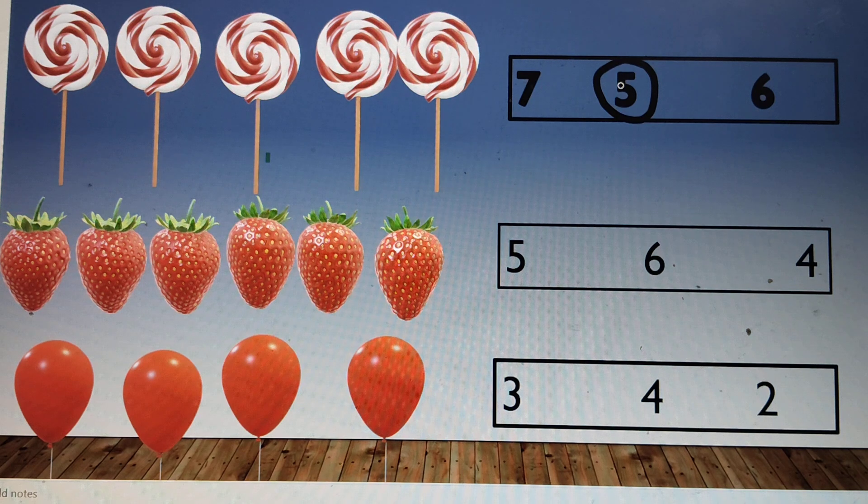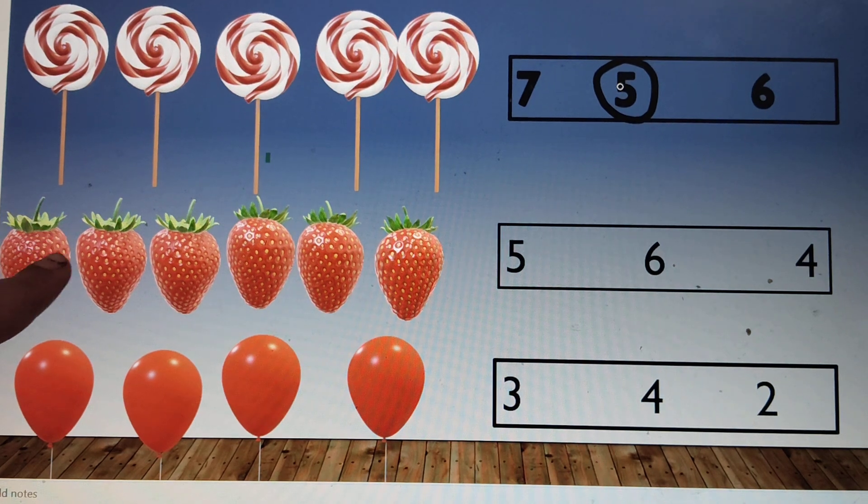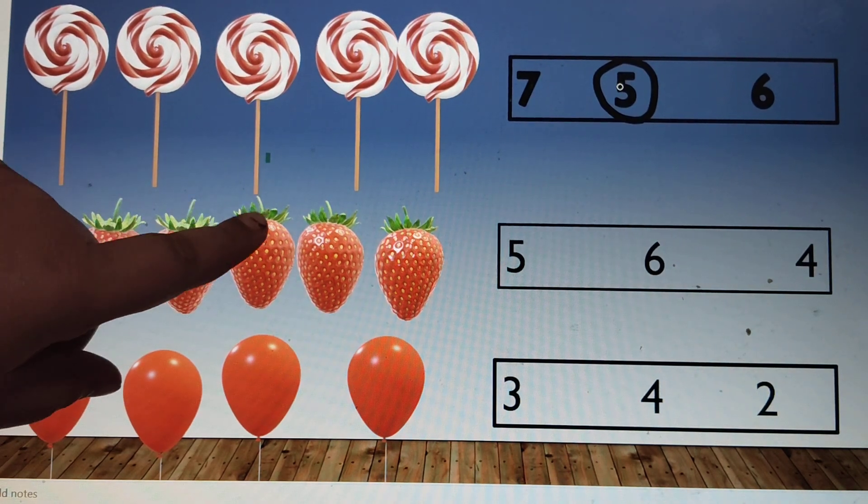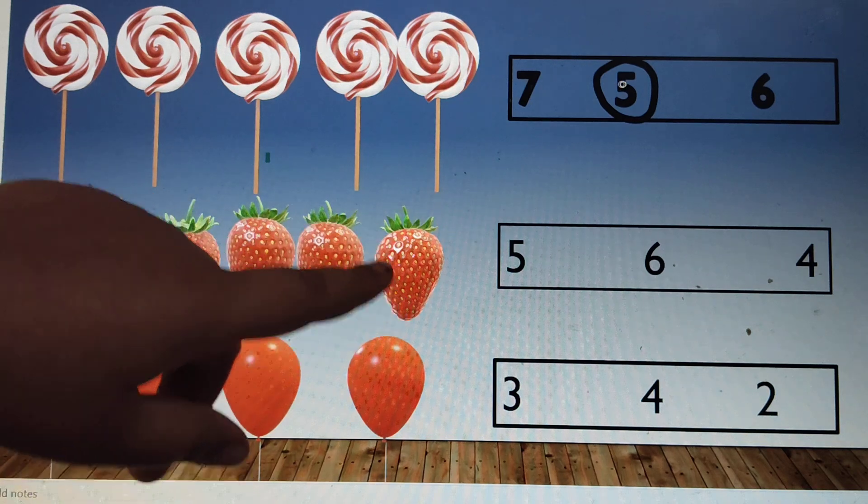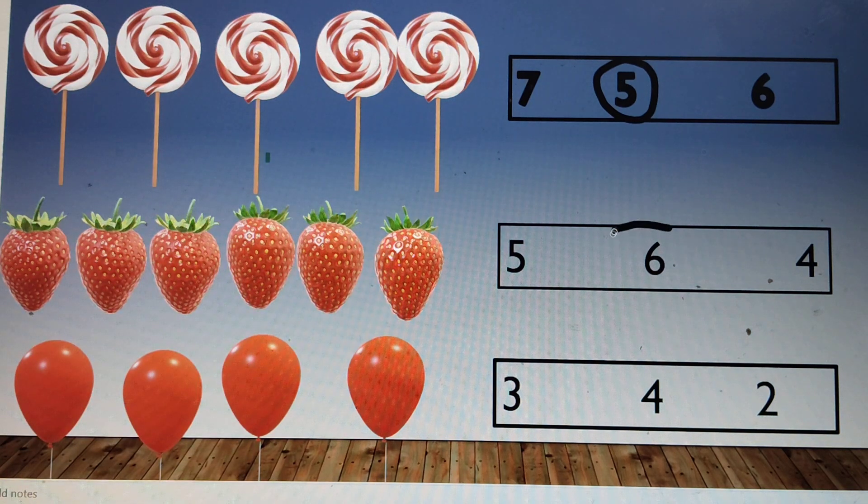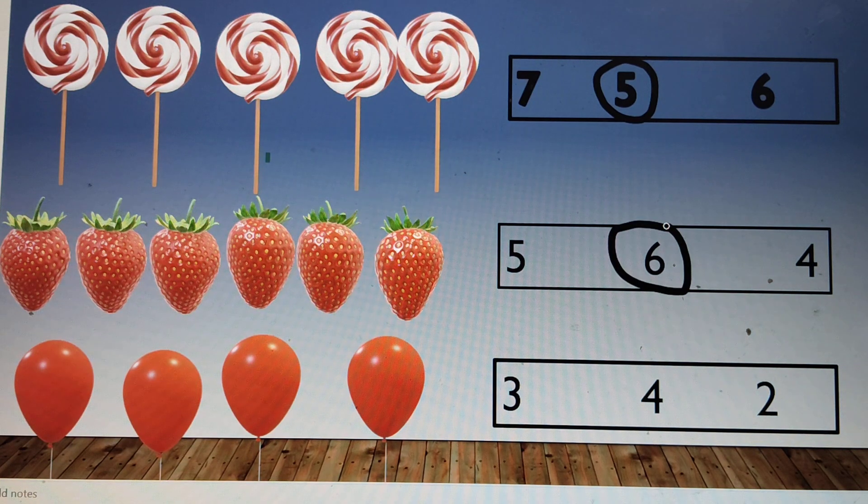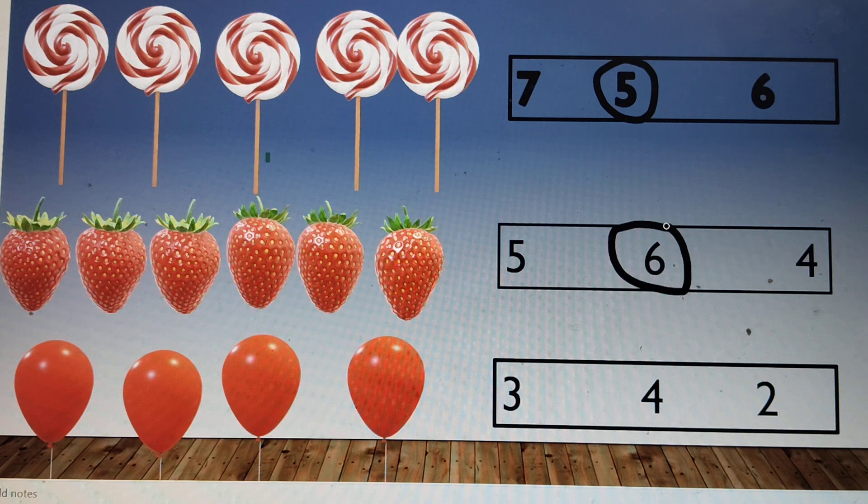How many strawberries do you see here? One, two, three, four, five, six. Six. Circle the number six. Six strawberries. I love strawberries.